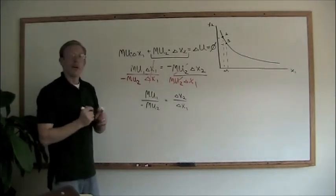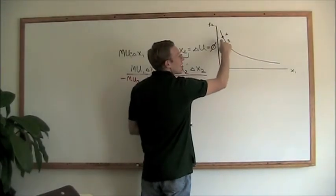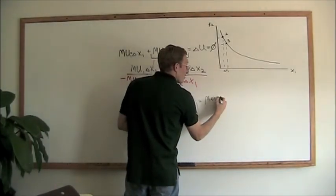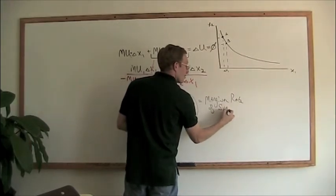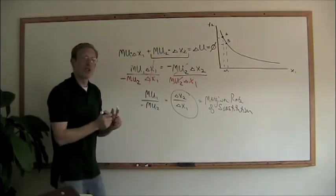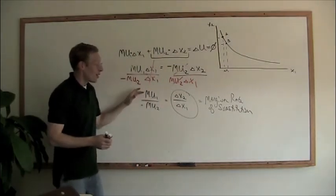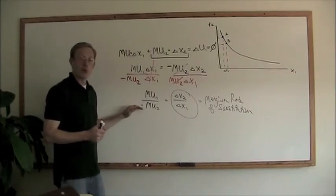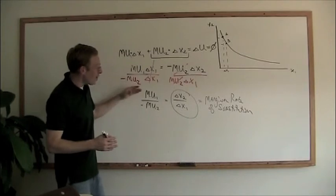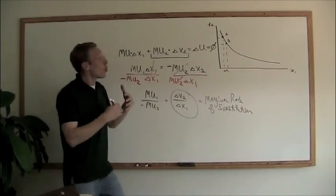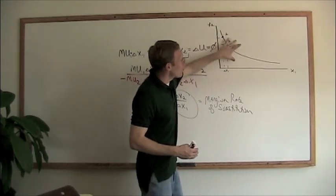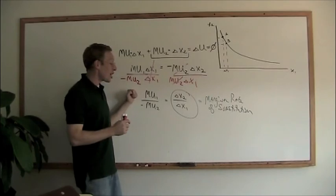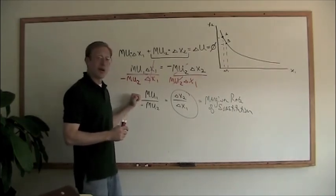That result — Δx2 over Δx1 — is the slope of our indifference curve, which is our marginal rate of substitution. So the marginal rate of substitution equals MU₁ divided by MU₂. In summary, the slope of the indifference curve, the marginal rate of substitution, tells us the trade-off between the two goods, and it also tells us the ratio of marginal utilities of those two goods relative to each other.